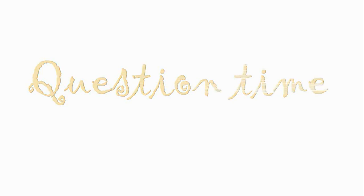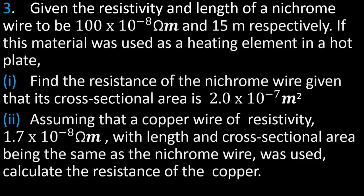Question Time. Given the resistivity and length of a Nichrome wire to be 100 × 10⁻⁸ ohm-meters and 15 meters respectively, if this material was used as a heating element in a hot plate: one, find the resistance of the Nichrome wire given that its cross-sectional area is 2 × 10⁻⁷ m². Two, assuming the copper wire has resistivity of 1.7 × 10⁻⁸ ohm-meters with length and cross-sectional area the same as the Nichrome wire, calculate the resistance of the copper.